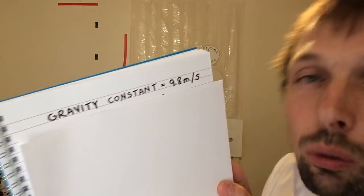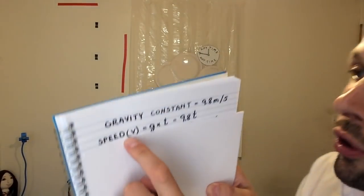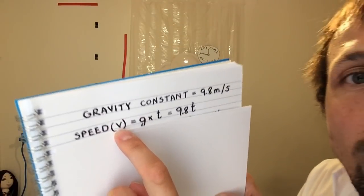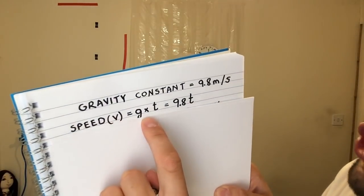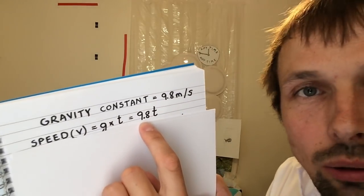For this calculation we will need the gravity constant, which is 9.8 meters per second squared — you probably remember that from school. To calculate the speed of the clip when it hits the ground, we use the formula V equals G times T, where G is 9.8. So V equals 9.8T, because every second the speed increases by 9.8 meters per second.